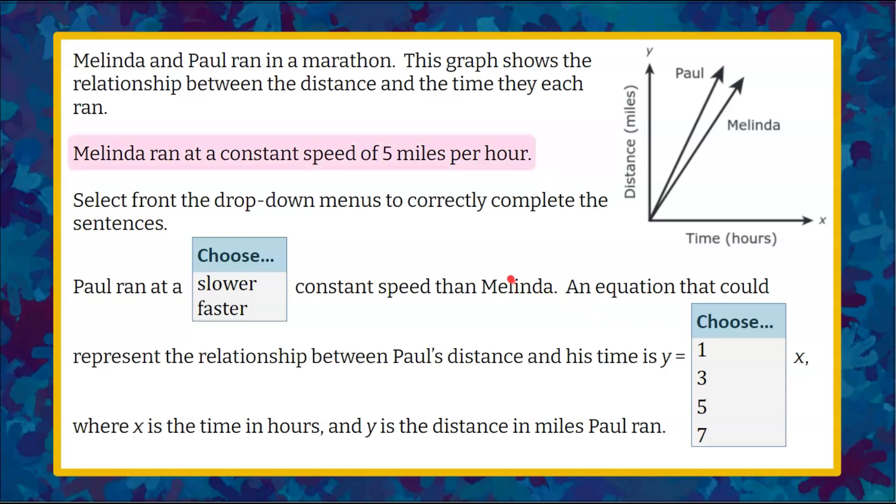Welcome back. Here we're going to find and understand that Melinda ran at a constant speed of 5 miles per hour. So we're going to go to the graph and find her in the graph. Here is the line that represents Melinda. So she is running at a constant speed of 5 miles per hour.